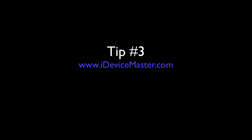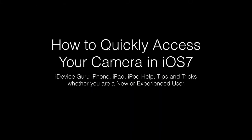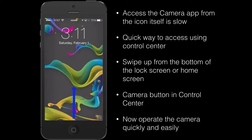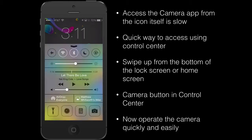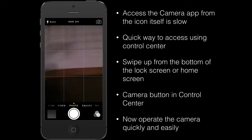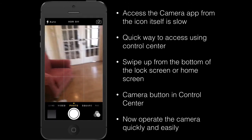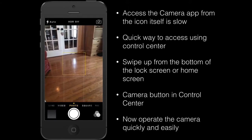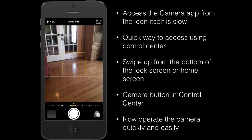Tip number three: if you've ever wanted to access your camera very quickly but found it takes too long to access the camera app, there's a new quick way in iOS 7. Access Control Center by swiping up from the bottom of the screen, and in the bottom right-hand corner you'll see a camera button. Click on that and it opens up your camera straight from the lock screen, ready to take pictures.